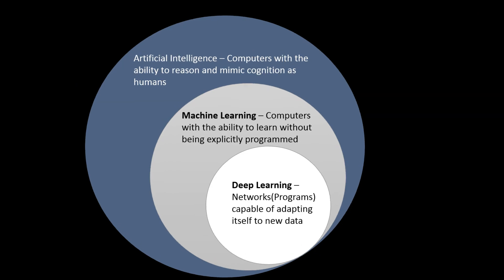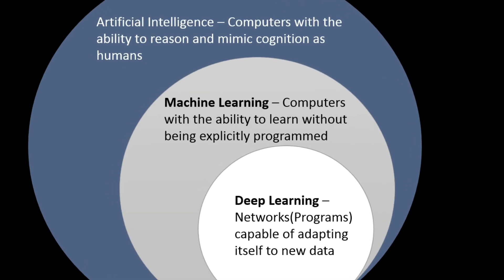Everything we are doing — whether machine learning, deep learning, or other techniques — is all a child of a tree called artificial intelligence. Our ultimate quest is to achieve the goal of AI, which is giving computers and machines the ability to mimic human cognition and behavior. Machine learning is where techniques give computers the ability to learn on their own without being explicitly programmed, and deep learning is a subset of machine learning that comprises mainly of neural networks.